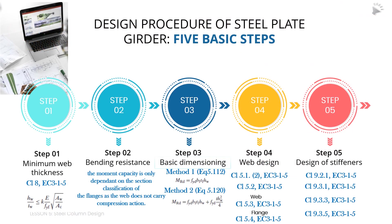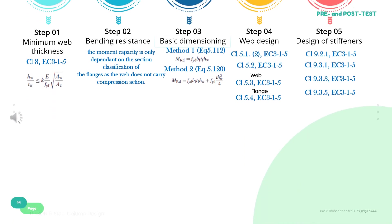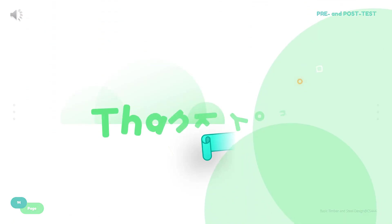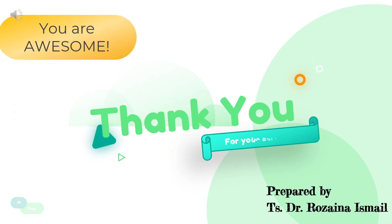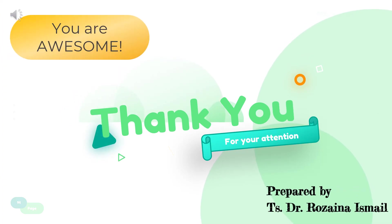Here are the five basic steps in the design procedure for steel plate girder. The related clauses are mentioned in the steps to be taken in the design procedure. Thank you for your attention — you are awesome!